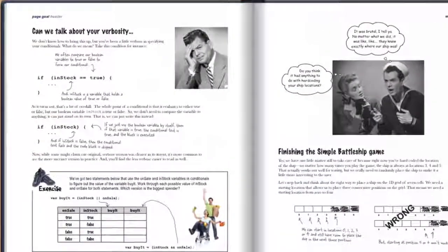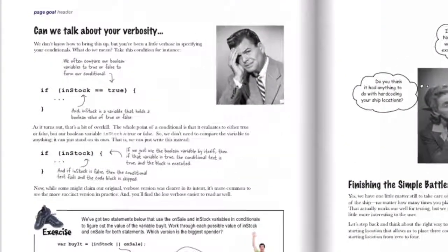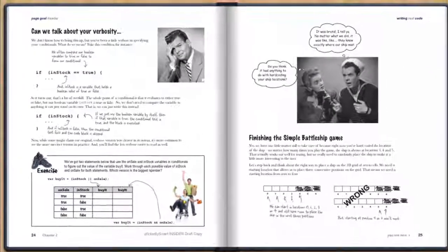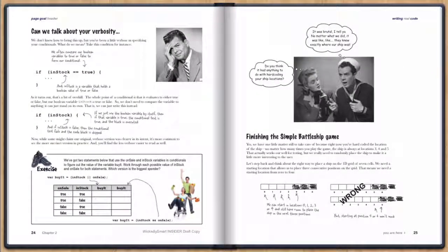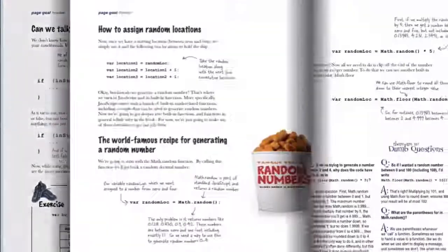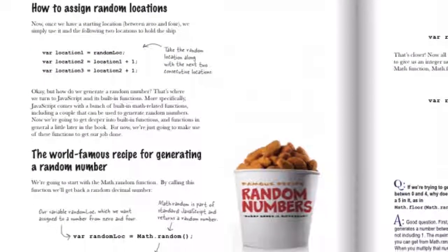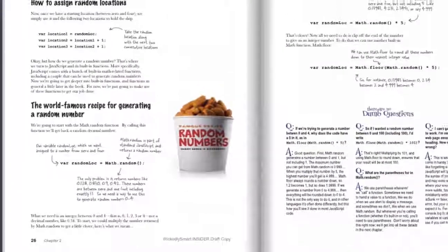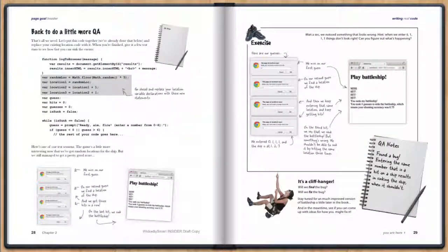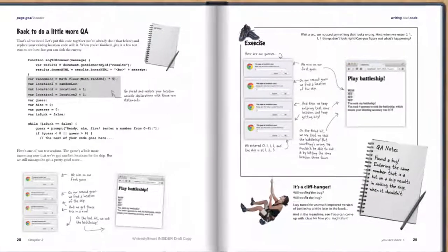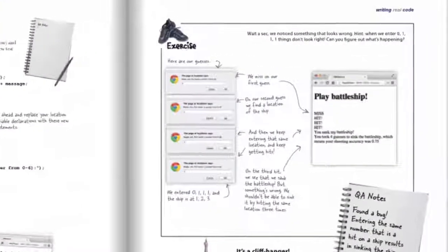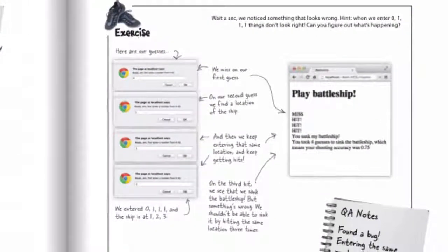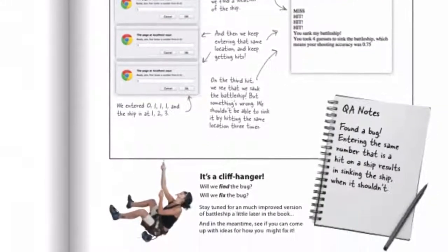We'll also give you some advice on how to avoid embarrassing coding practices with your conditions. One thing our initial code doesn't tackle is randomly placing the ship on the board, so we're going to spend some time talking about how to generate random numbers using some built-in functions. And finally, there's something wrong with our code. Can you find it? Will we fix it? It's a cliffhanger. And of course, you're going to have to keep reading to find out.